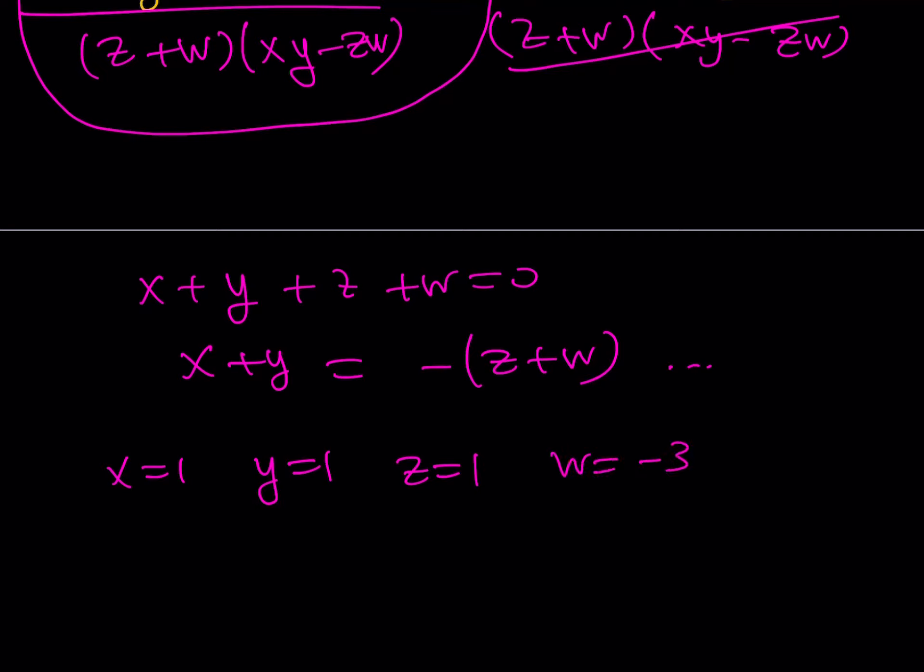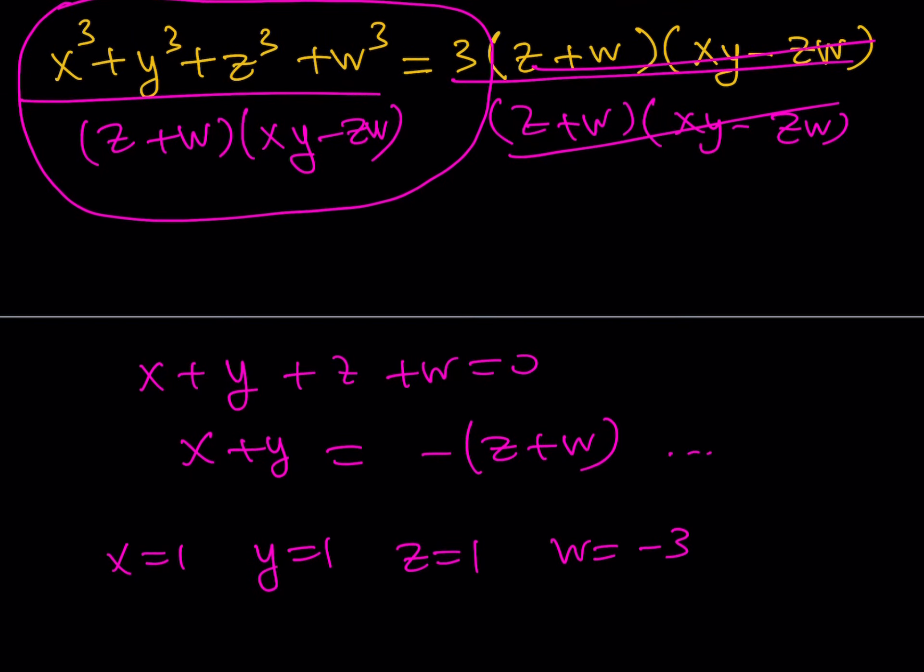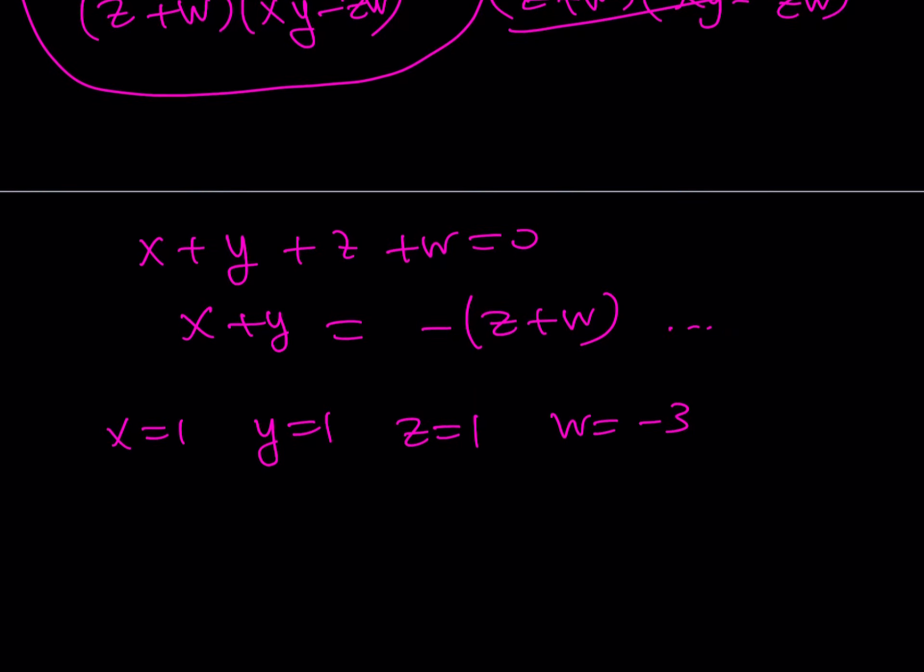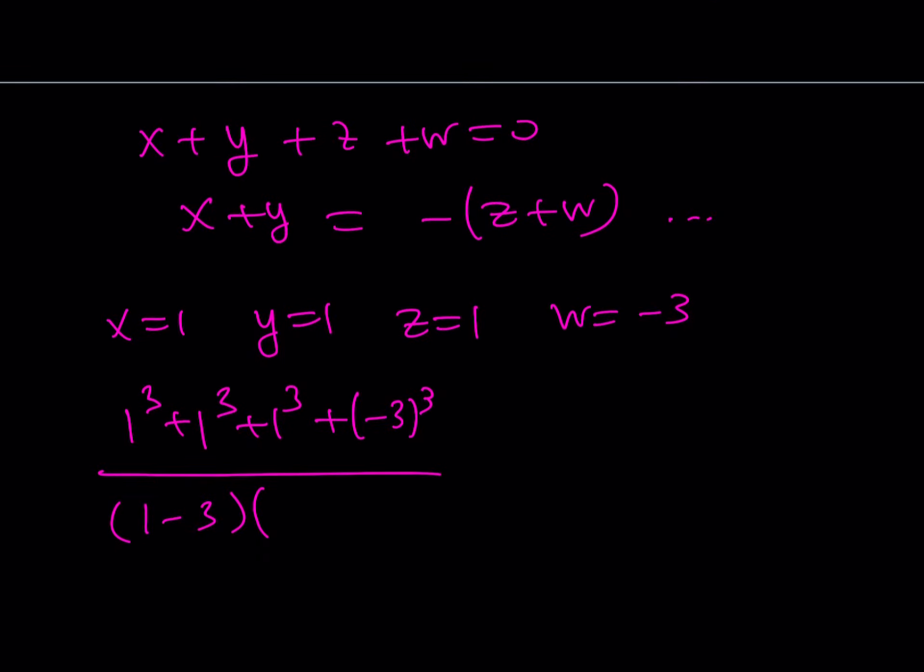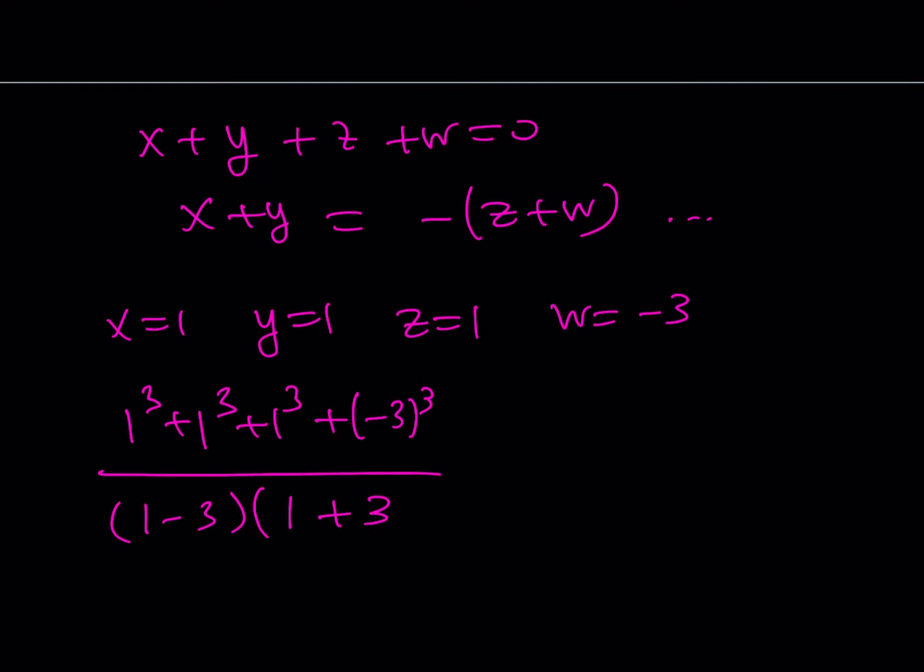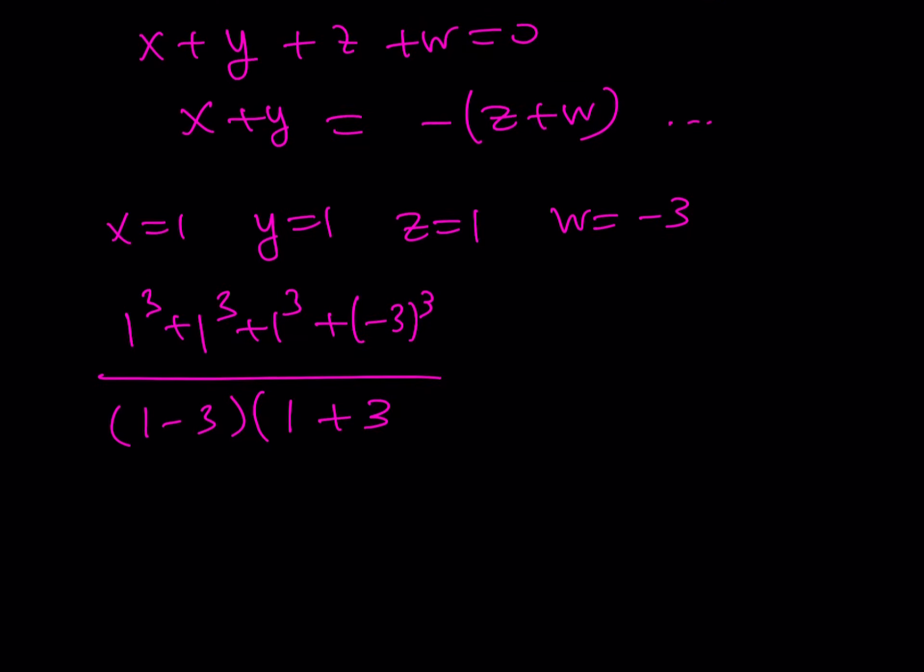What I can do is take those values and substitute into the expression. One cubed plus one cubed plus one cubed plus negative three cubed. That's my numerator. Divided by z plus w, which is one minus three, times xy minus zw. xy is one, zw is negative three, but that should be a positive three, so it's one minus negative three, one plus three.